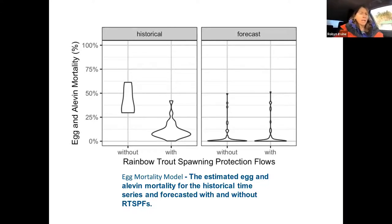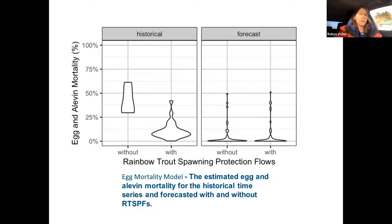The forecast based on a predictive model from work done over the past couple of years, looking at egg mortality, shows us that it's very unlikely that there's much difference between egg mortality with or without flows.